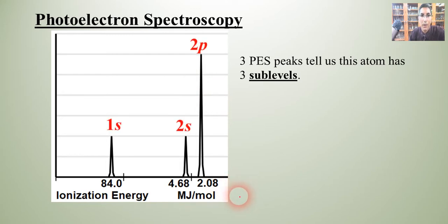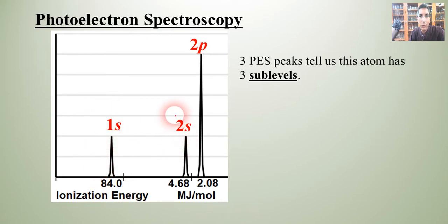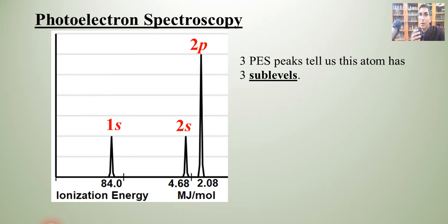From first-year chemistry, we give those sublevels names. We start with 1s, then 2s, then 2p. After that we have 3s, 3p, 4s, 3d, and 4p — it just keeps going. We recall how to write electron configurations from first-year chemistry; if not, you can watch my video on that as well.